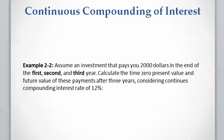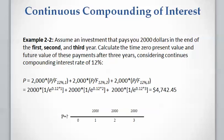Now let's work on an example — it is the previous example but we are going to consider continuous compounding interest. Assume there is an investment that pays you $2,000 at the end of year one, year two, and year three. We want to calculate the present value at the present time and the future value at the end of year three, with a continuous compounding interest rate of 12%. First, we draw the timeline with three $2,000 payments at the end of year one, year two, and year three.